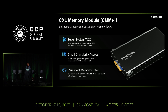The CXL memory module H targets expanding capacity utilization of memory for AI applications. It provides better TCO and smaller granularity access — instead of having to write to an NVMe device in blocks, you can now read and write in byte sizes. It also provides persistence. Since Optane has left and NVDIMM solutions remain limited, the CMMH addresses this gap and goes well beyond what was previously available.